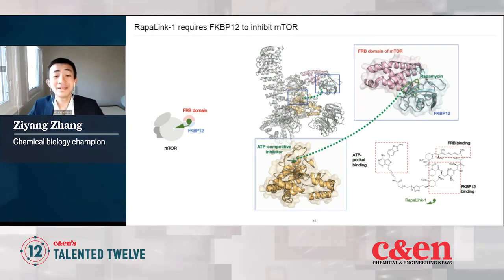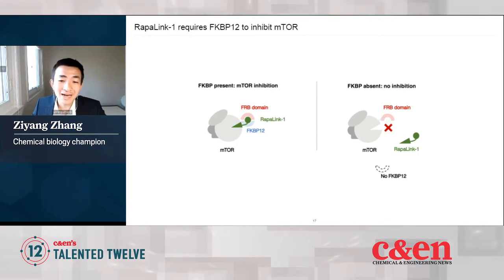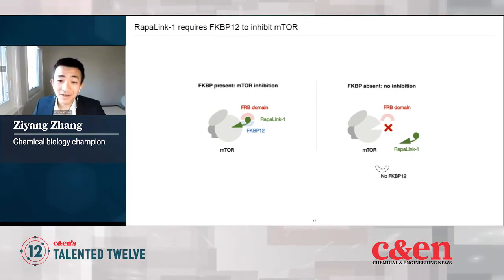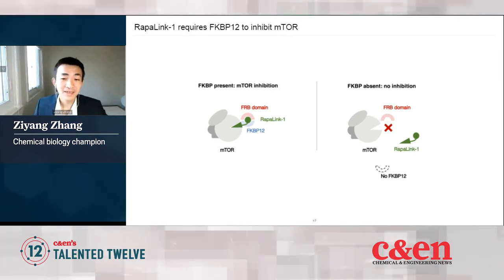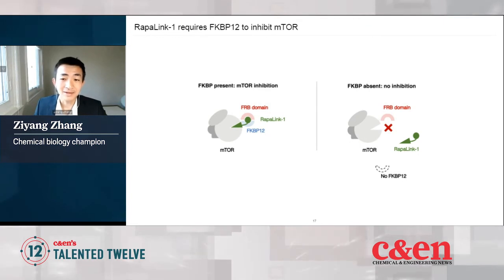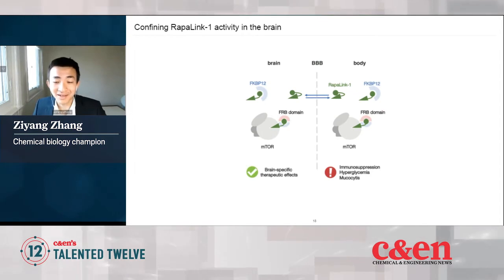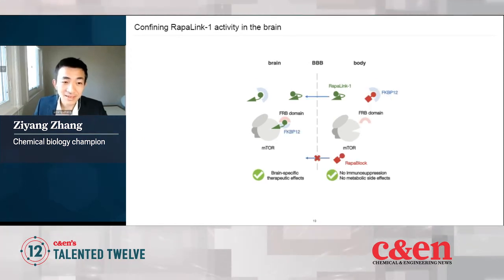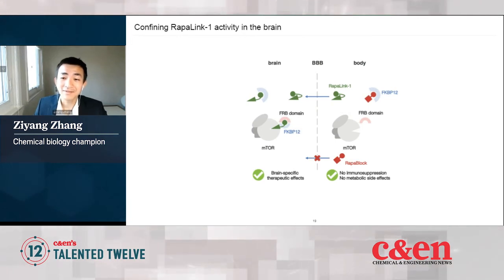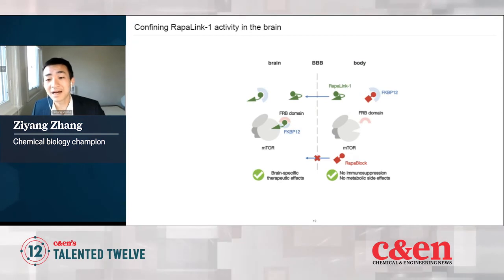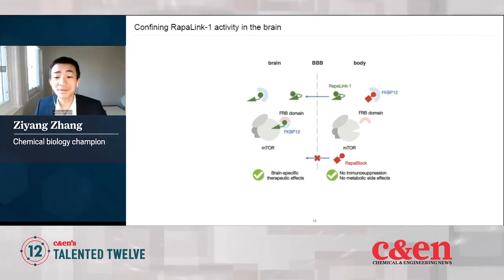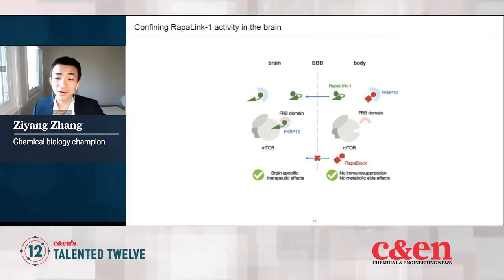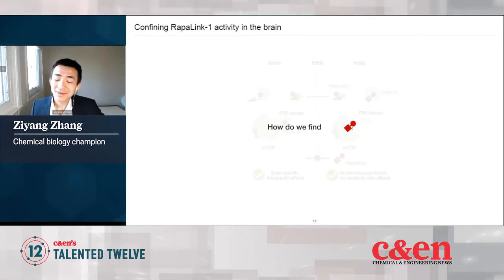What this means is that our molecule absolutely needs its FKBP12 partner to do its work — without FKBP12, our molecule won't function at all. With this knowledge, we looked back at our original problem: our drug molecule is inhibiting mTOR everywhere, which is bad. We thought: if we could find a second molecule to steal FKBP12 away from our active inhibitor, we could stop it from acting outside the brain.